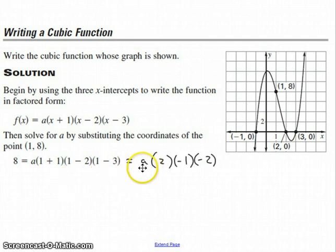So now, that simplifies to A times 2 times negative 1 times negative 2. Or in other words, 8 is equal to 4A. And so A is equal to 8 over 4, or in other words, 2.